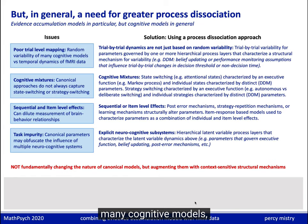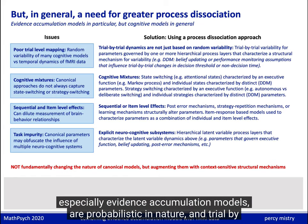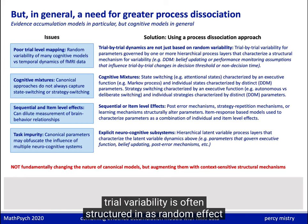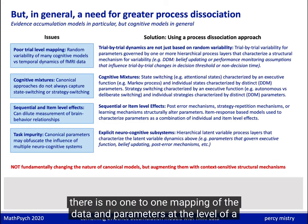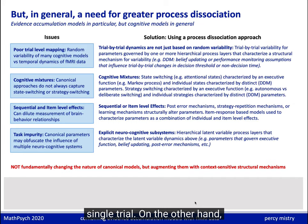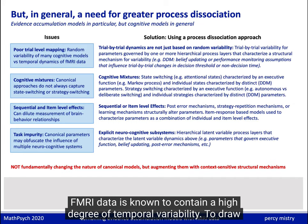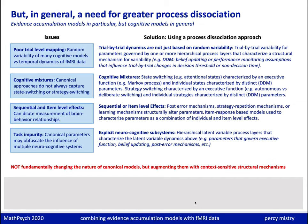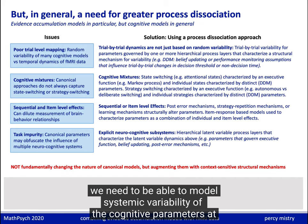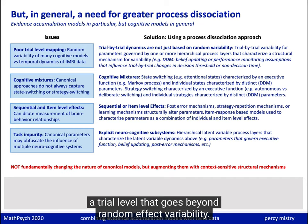First, many cognitive models, especially evidence accumulation models, are probabilistic in nature, and trial-by-trial variability is often structured in as random effect variability. Thus, there is no one-to-one mapping of the data and parameters at the level of a single trial. On the other hand, fMRI data is known to contain a high degree of temporal variability. To draw a connection between the dynamics of neural and cognitive processes, we need to be able to model systemic variability in the cognitive parameters of a trial that goes beyond random effect variability.